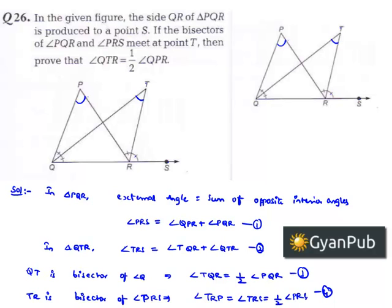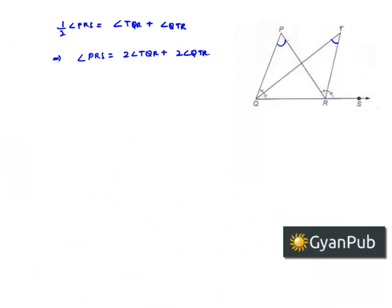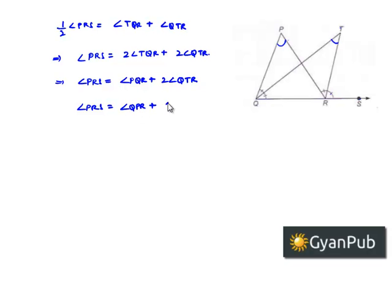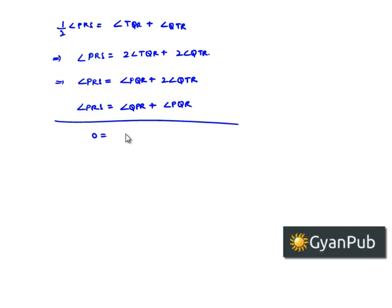But here, angle PRS is equal to angle QPR plus 2 times angle QTR. Now, let us write the first equation underneath it: angle PRS is equal to angle QPR plus angle PQR. Subtracting, we get angle PQR cancelled, giving 0 equals 2 times angle QTR minus angle QPR. That implies angle QTR is equal to half times angle QPR.